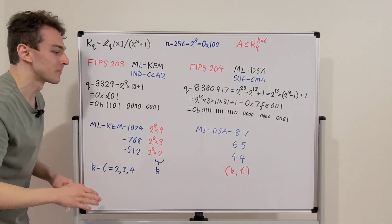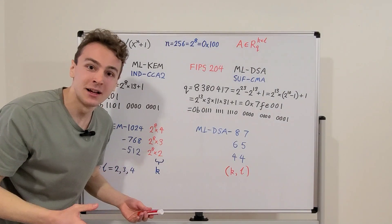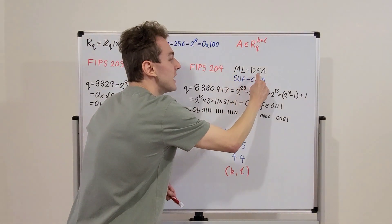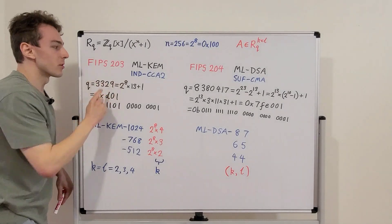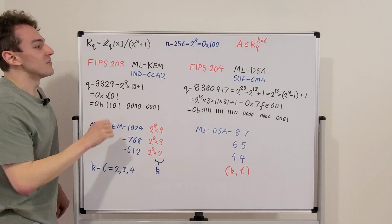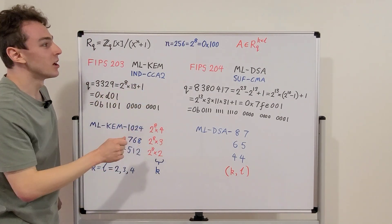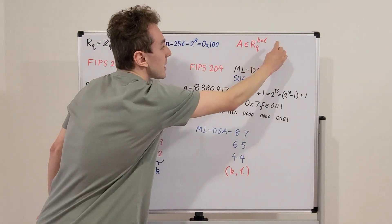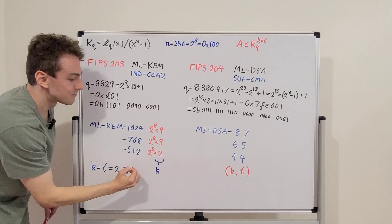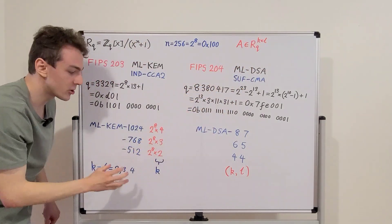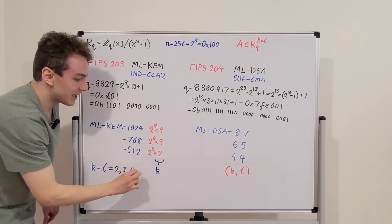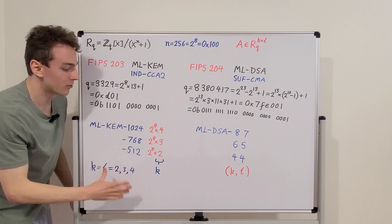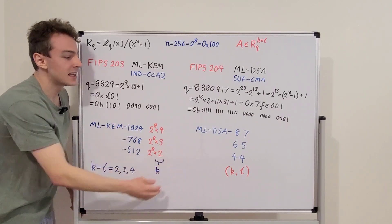In summary, this video introduced ML-KEM and ML-DSA — module lattice based key encapsulation mechanism and module lattice based digital signature algorithm. These are respectively specified in FIPS 203 and FIPS 204. We investigated the constants N and Q, and the parameters K and L, which are used to specify the three parameter sets for each algorithm. K and L are the most important parameters in terms of the naming convention, though other parameters also vary between parameter sets.